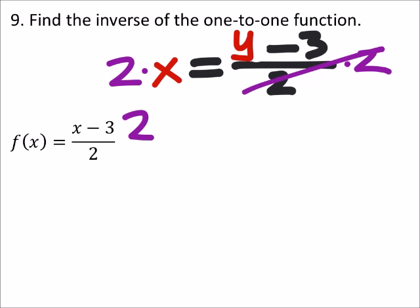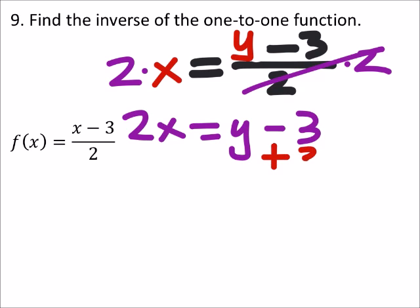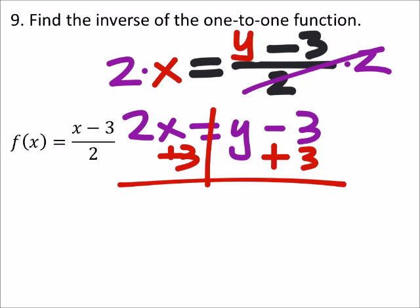That gives us 2x equals y minus 3. Next thing to solve this equation, I would be looking to add 3 to both sides of the equation. And 3 is not a like term with that 2x.